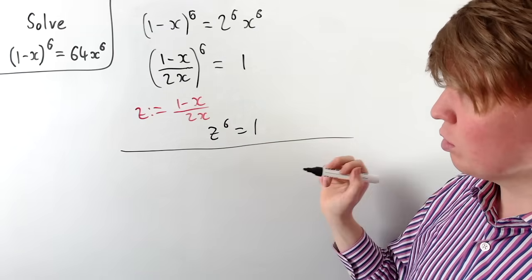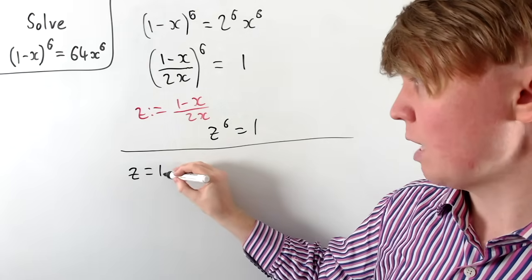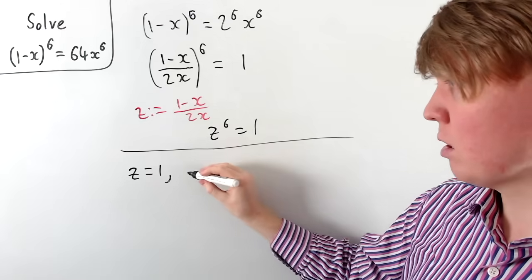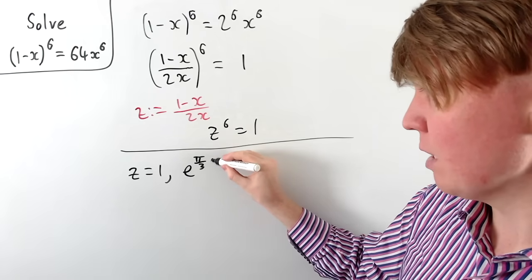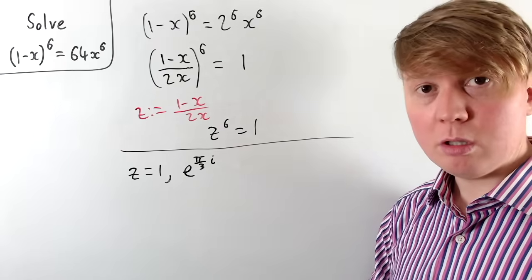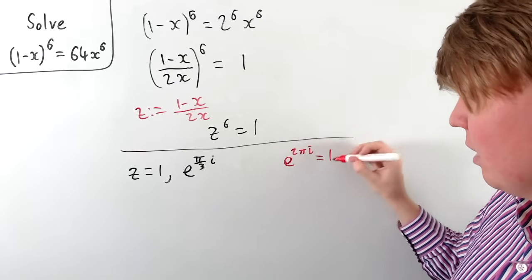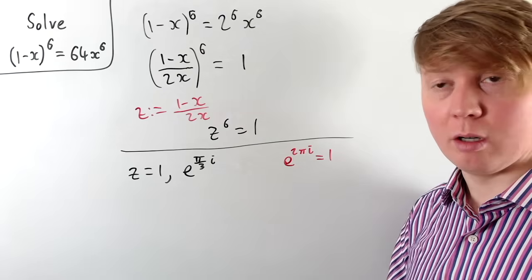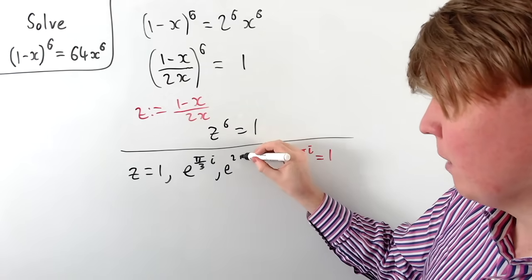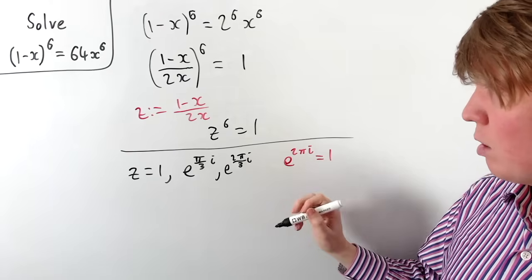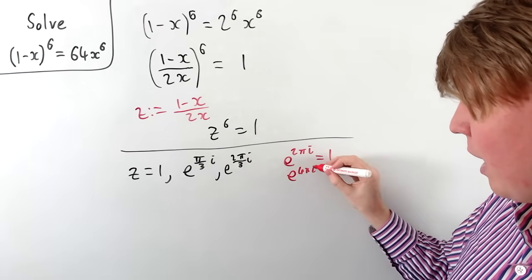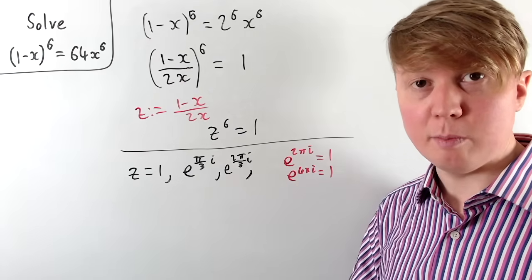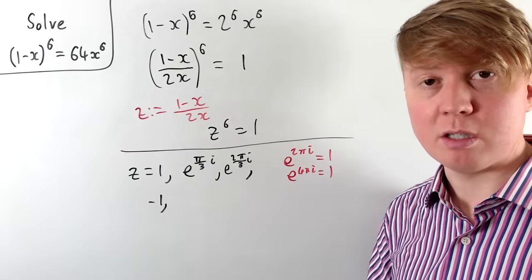The solutions to z to the 6 equals 1 are the complex roots of unity. First we get z equals 1, our first real solution. Then z equals e to the 2πi/6, which simplifies to e to the πi/3, since raising it to the 6th power gives e to the 2πi which equals 1. Our next root is e to the 2πi/3. Then e to the 3πi/3, which is e to the πi, giving us negative 1 — our second real solution.